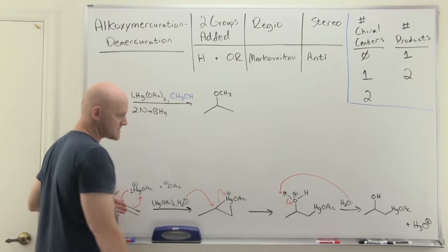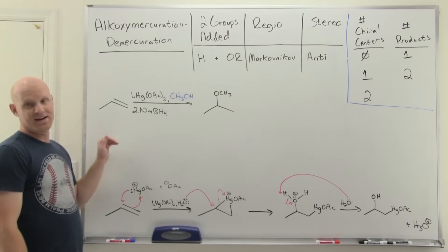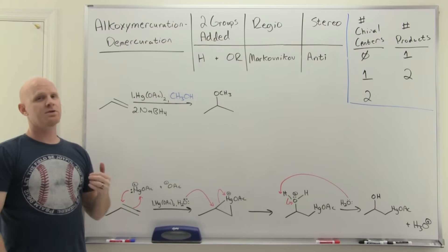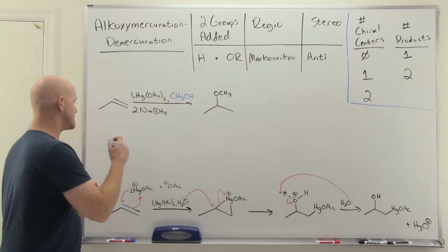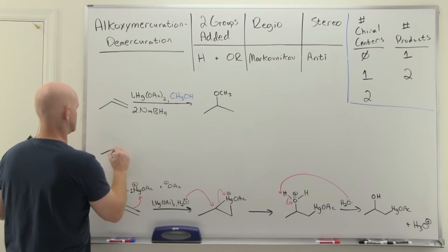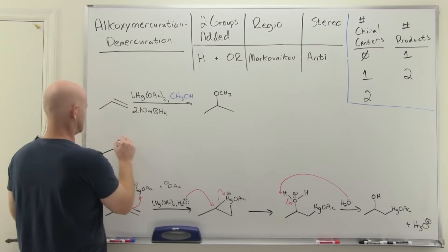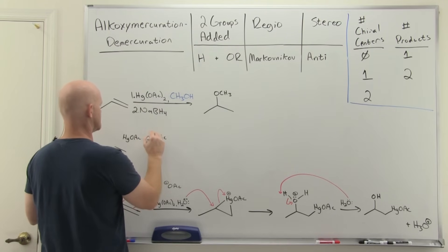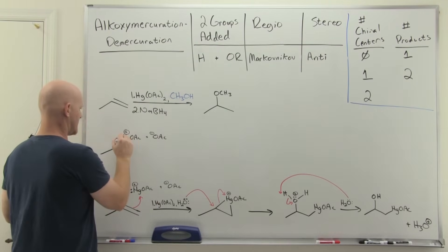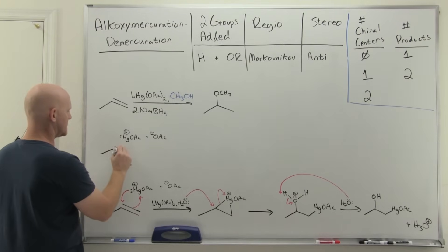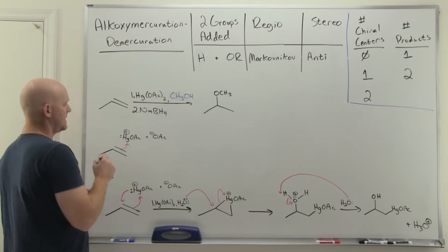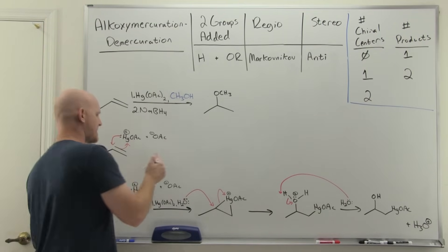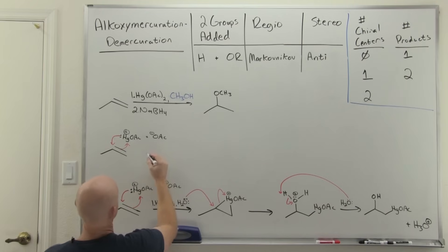So I've got the mechanism for step one of oxymercuration demercuration here and we'll see it's exactly analogous for alkoxymercuration. And just like with oxymercuration demercuration, you do not have to know the mechanism for step two here. So mercuric acetate is going to dissociate to a small extent just like it did before. And our alkene is the nucleophile in step one and will come and attack the mercury, but again mercury's got a lone pair and says don't form a carbocation, I will attack back, and we'll form a three-membered ring that we'll call a mercurinium ion here.